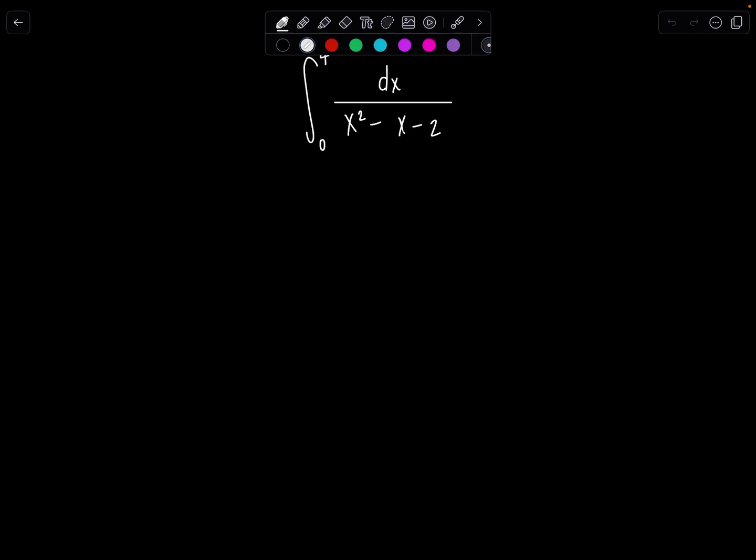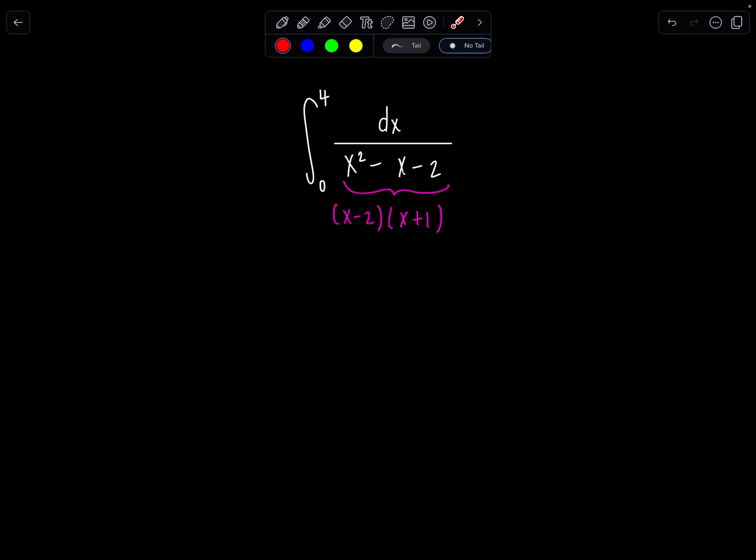but it's easier to spot once you factor the denominator. So let's go ahead and do that. The denominator factors into x minus 2 times x plus 1. And since the integrand, the integrand is the function you're integrating, it's a rational function and it's not continuous at x equals 2 and x equals negative 1. So x equals 2, x equals negative 1, our integrand is not continuous.